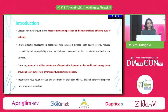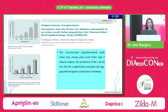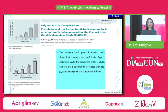Currently, 16 to 20% of our diabetic patients are suffering from chronic painful diabetic neuropathy. Importantly, 39% have not even received any treatment for their pain, while 12.5% have never even reported to their doctors — sometimes not realizing it's related to diabetes. Our own epidemiological data from Dr. Mohan Center in the CURE studies shows the prevalence of diabetic neuropathy is around 26.1% in our population, significantly associated with age, HbA1c, and duration of diabetes.